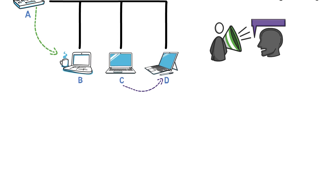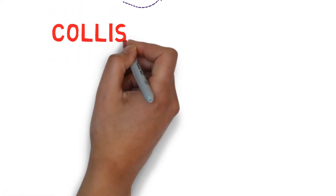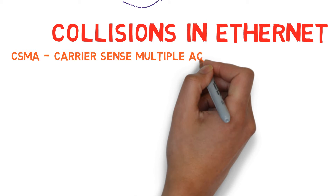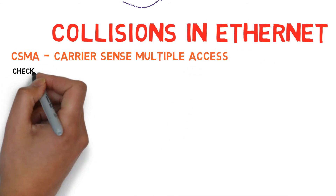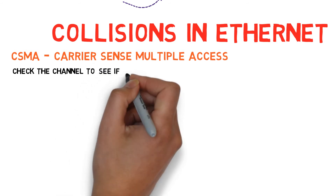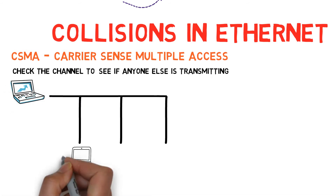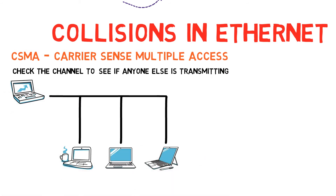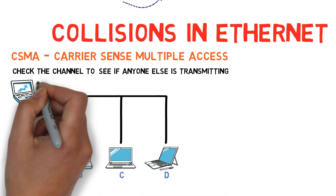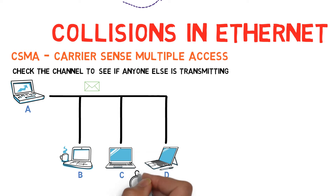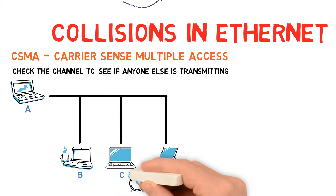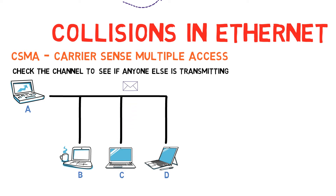How are collisions handled in Ethernet? Ethernet uses two main mechanisms to deal with collisions. The first is called CSMA, which stands for Carrier Sense Multiple Access. This basically means that when a station wants to transmit data, it first senses the channel to see if anyone else is transmitting by checking the signal level of the line. If the channel is in use, the station will wait and try again later. So if A is transmitting and C wants to send data, C will wait until A finishes its transmission before starting to transmit on its own. This is just like a human conversation, where one person waits until the other stops talking, and only then does that person talk.